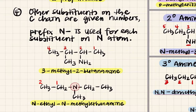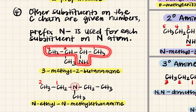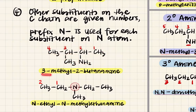Let's look at an example. First find the longest carbon chain: 1, 2, 3, 4. So this is a 4-carbon chain with amine — butanamine. We number from the end closest to the amine because amine has higher priority than alkyl groups (see the functional group priority table). So this will be 2-butanamine. You also have a methyl group attached to carbon number 3, making it 3-methyl-2-butanamine.